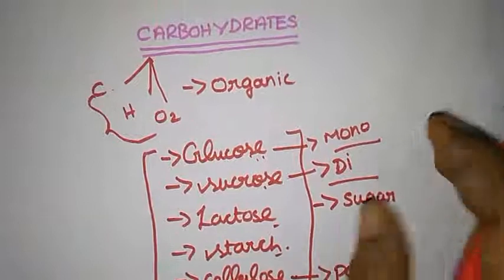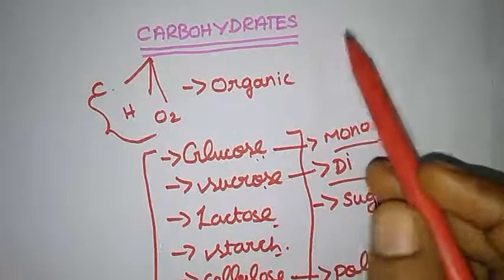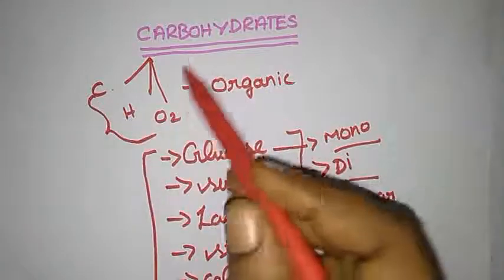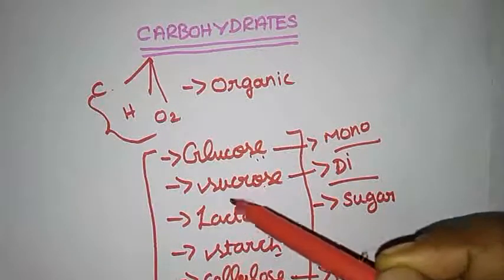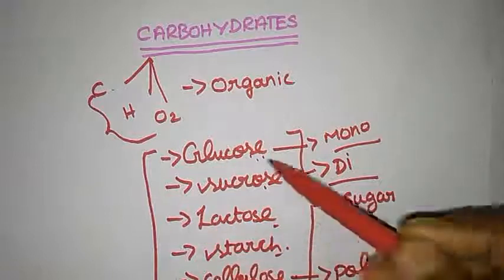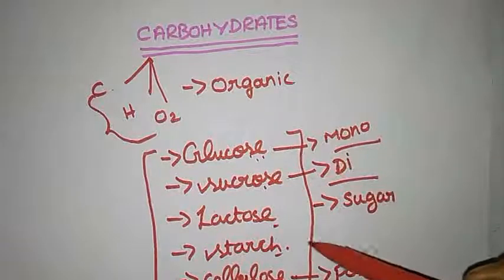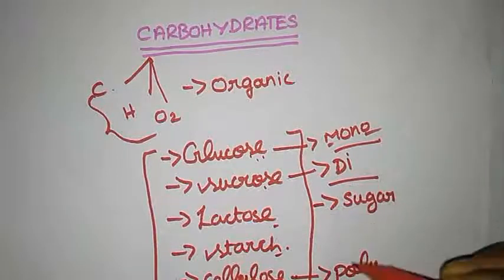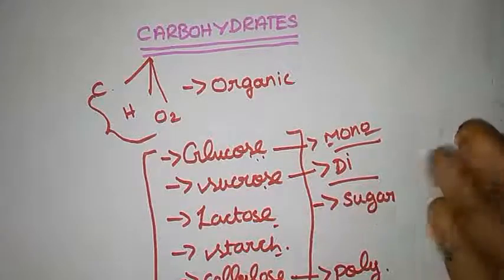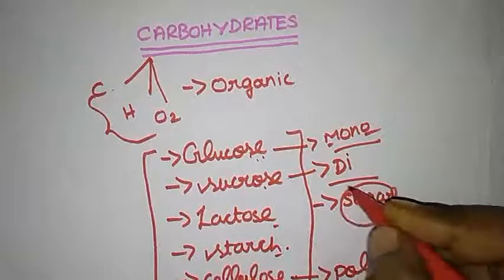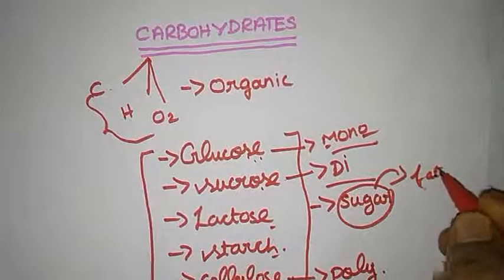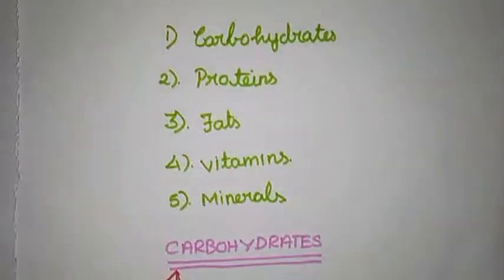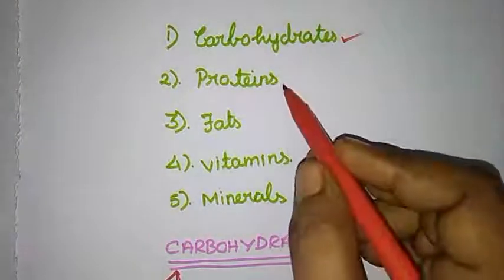That's it for carbohydrate — I hope you understand. Carbohydrate is one major source of nutrition. It is formed from carbon, hydrogen, and oxygen, making it an organic molecule. It contains glucose, sucrose, lactose, starch, and cellulose. If there is an excess of carbohydrate, it is converted into the form of fat through a separate process. Now we move on to the next classification of nutrition: proteins.